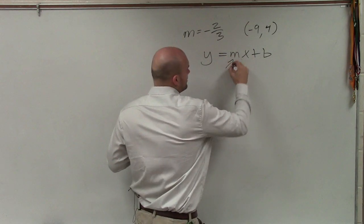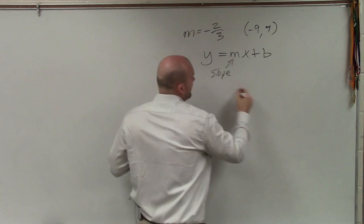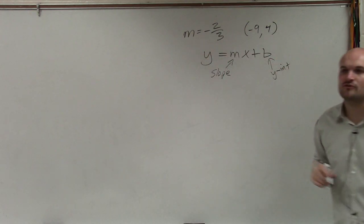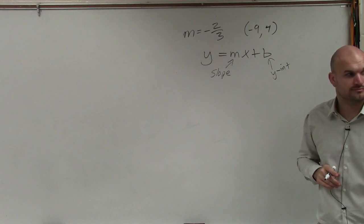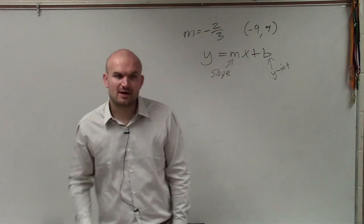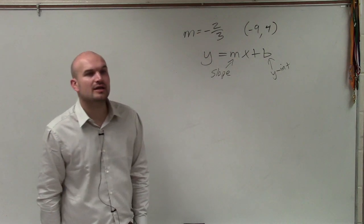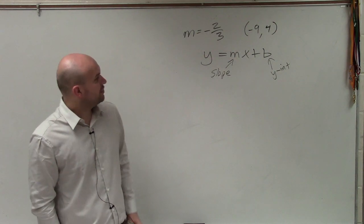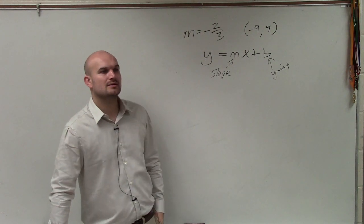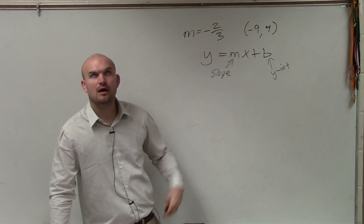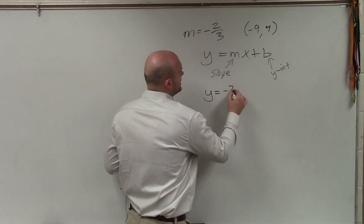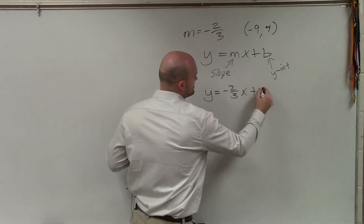And where m represents your slope, and b represents your y-intercept, where the graph crosses the y-axis. So looking at the information we have, do we know what the slope is? Yes, obviously. So we can write in negative two-thirds x plus b.